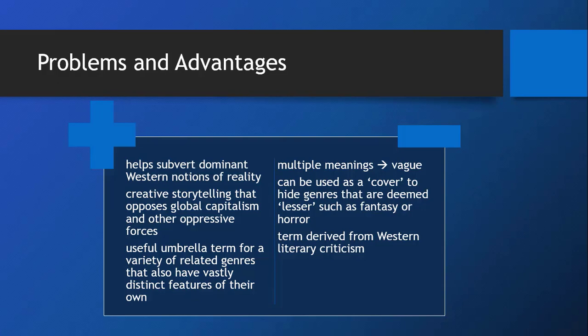Fantasy and science fiction, especially in their most traditional forms, can also reinforce certain colonial narratives — such as the evil other being located in the east and other associated orientalist tropes, or the frequently employed narratives of exploration that feature in both fantasy and science fiction. It's also a useful term because it subverts dominant Western notions of reality. Speculative fiction is less distanced from reality and focuses on the speculative element: it contains speculation about the world that could be true but doesn't have to be, and doesn't have to be entirely fantastic. It also covers a whole lot of creative storytelling that can oppose global capitalism and other oppressive forces through its many different ways of playing with consensus reality.